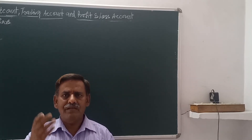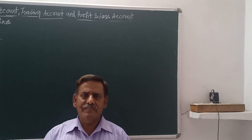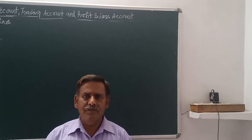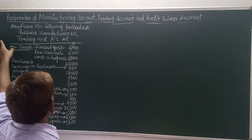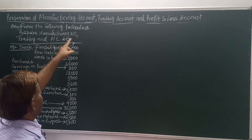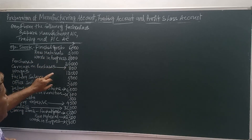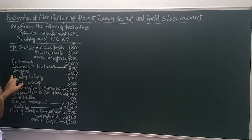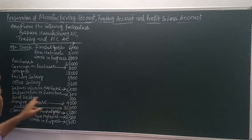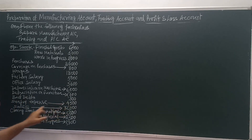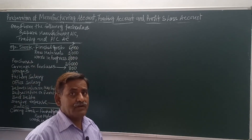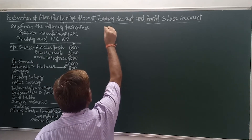After understanding all these concepts, we will now present a practical question to demonstrate the preparation of manufacturing account, trading account, and profit and loss account. The question is: from the following particulars, prepare manufacturing account, trading account, and P&L account. Given: opening stock — finished goods, raw materials, work in progress; purchases; carriage on purchases; wages; factory salary; office salary; depreciation on machine; depreciation on furniture; bad debts; sundry expenses; sales value; closing stock — finished material, raw material, and work in progress.